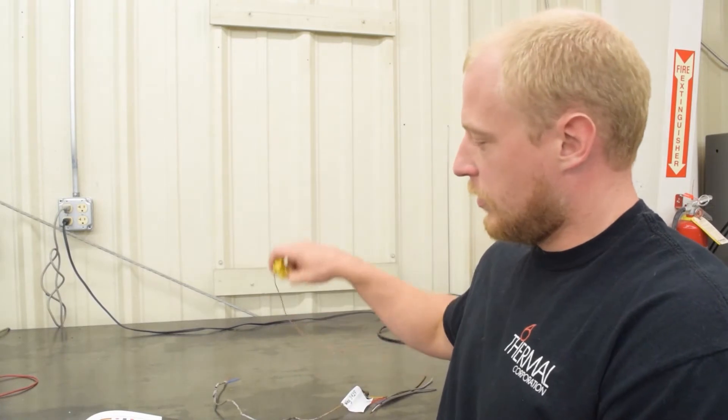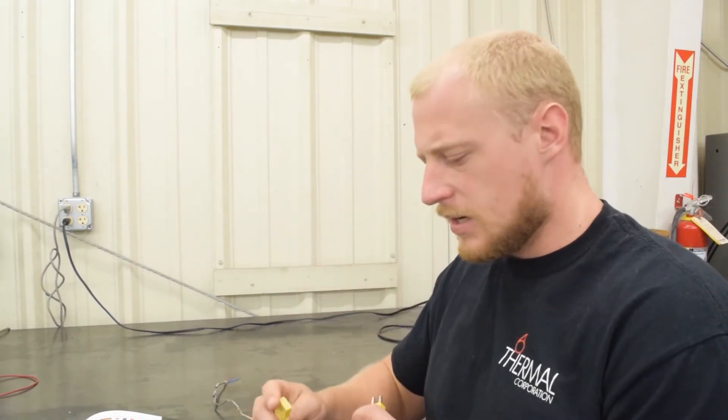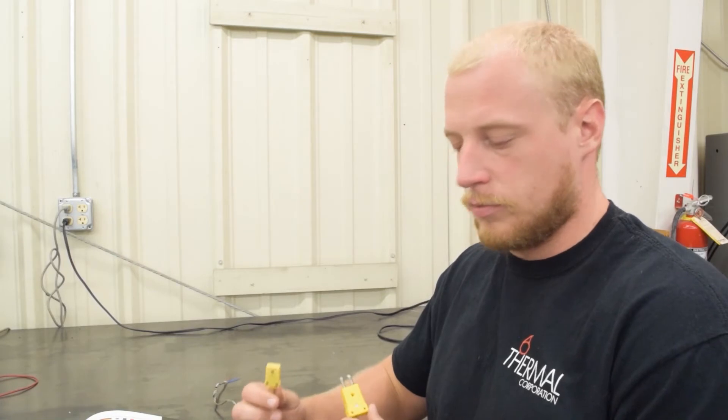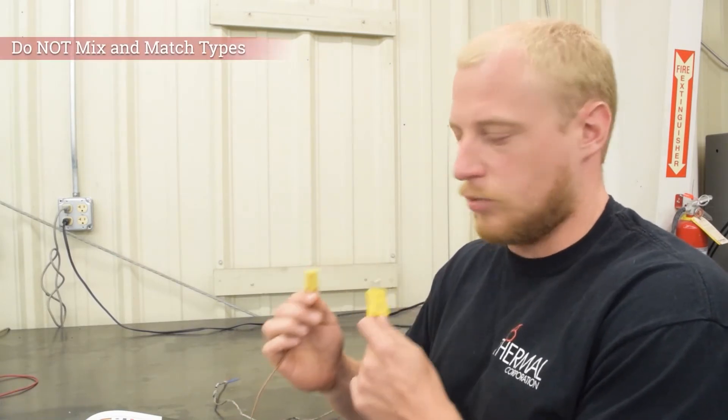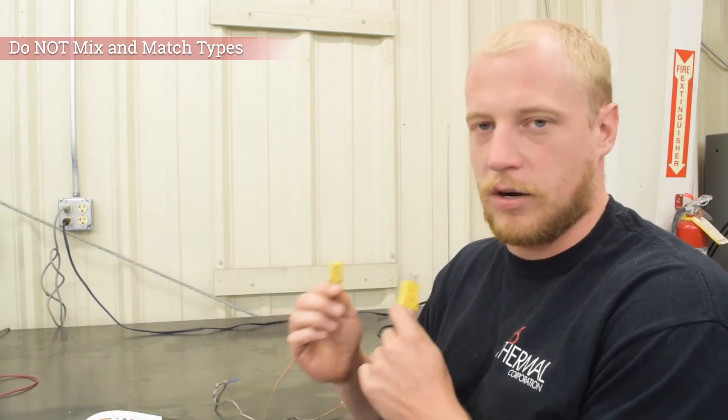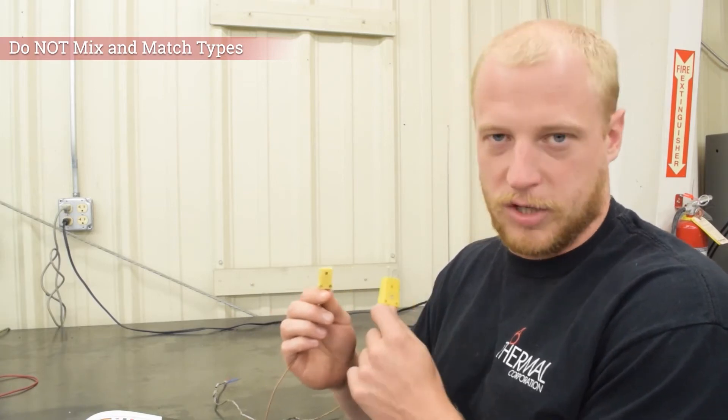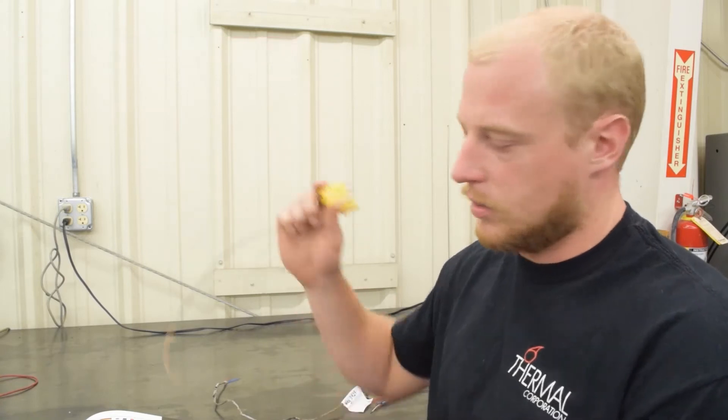One other important thing to note: if you have a type J thermocouple, it's not quite long enough to get back to your controller but you have this type J extension wire. You can't use this with your type J thermocouple. You can't mix and match extension wire with different thermocouple types. So that's just one thing to note.